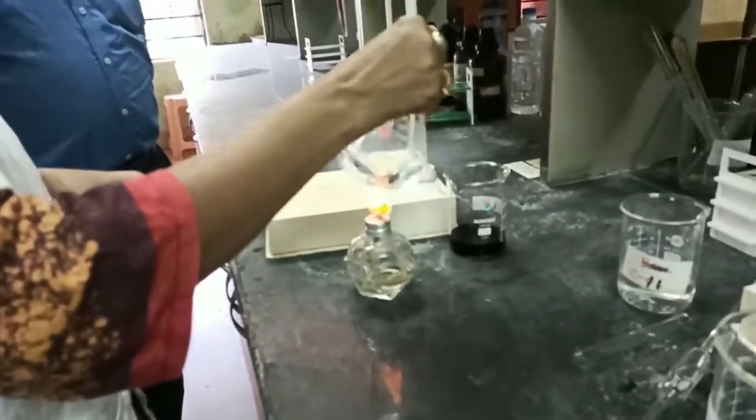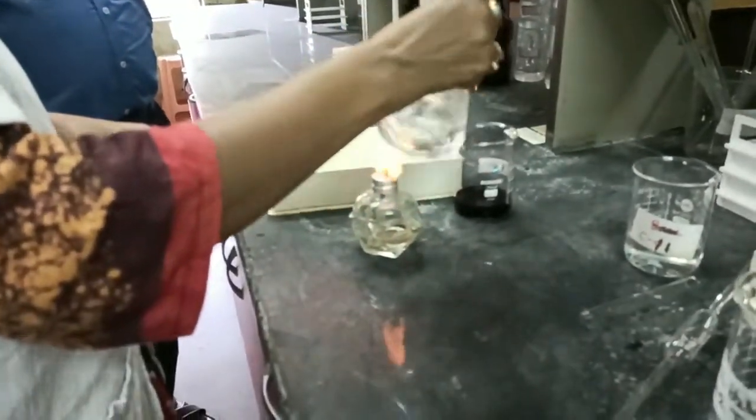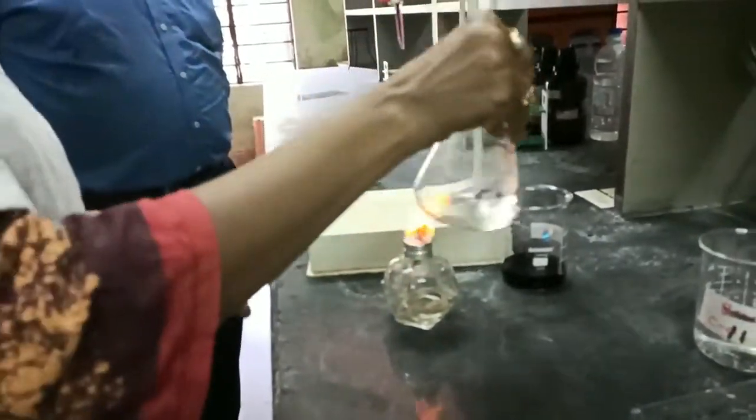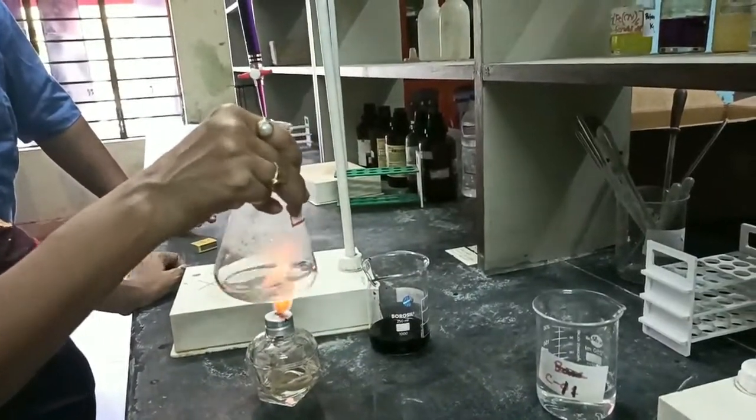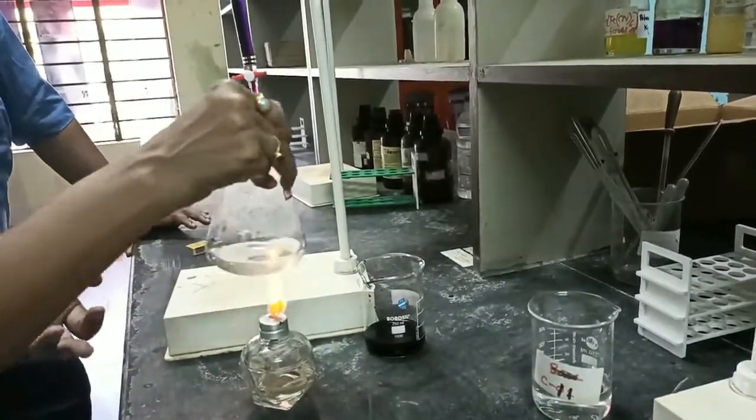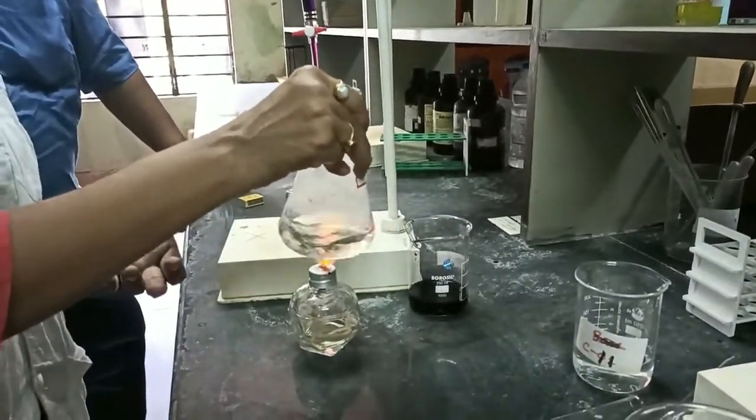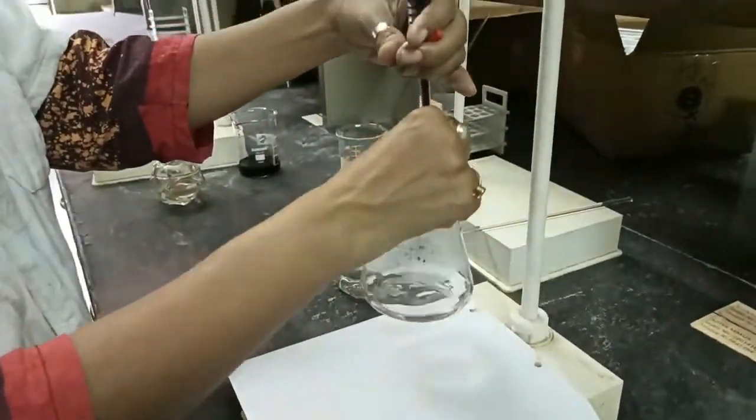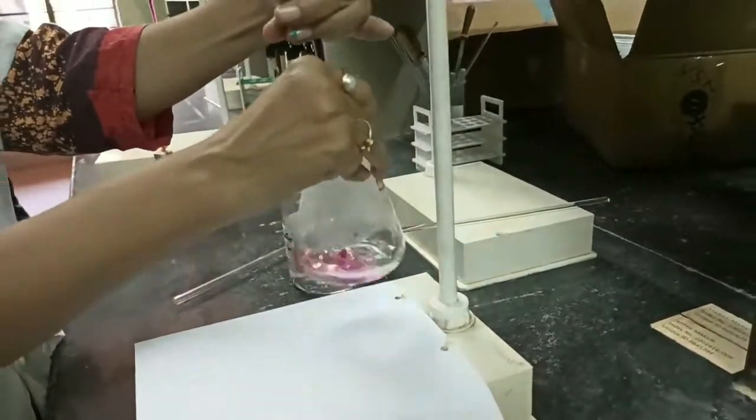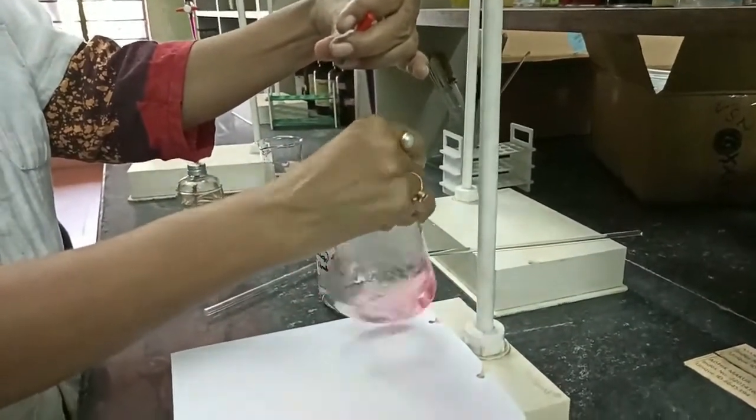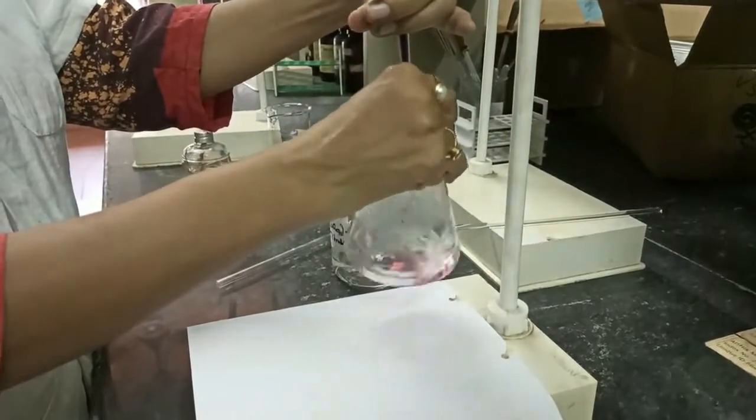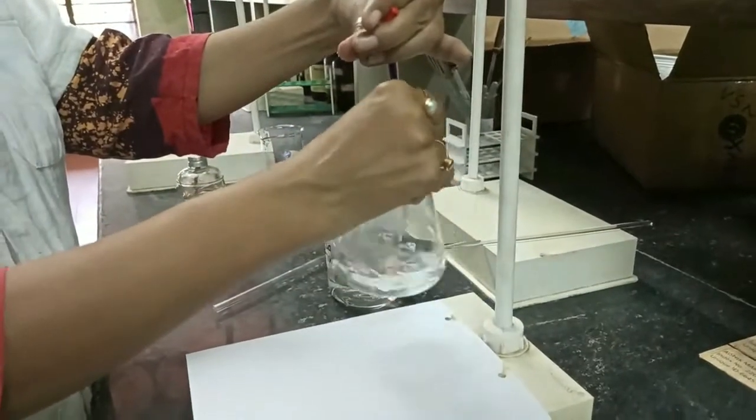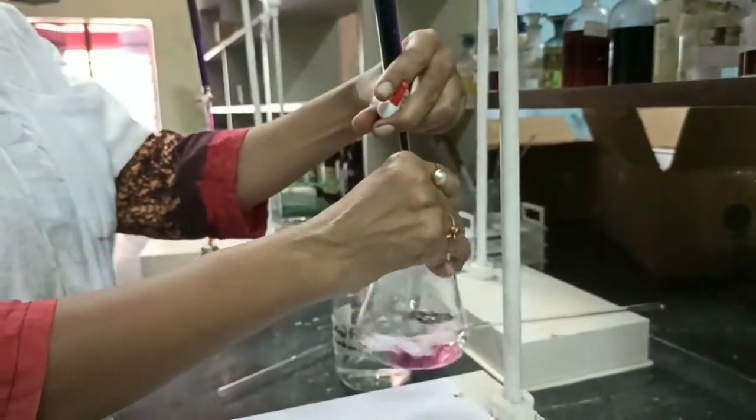Make sure the solution should not boil. When it is almost unbearable to touch, at that point of time we should start the titration rapidly with the solution. We need to do the titration process very rapidly so that the temperature remains in the range of 60 to 70 degree centigrade. If the temperature falls during the titration then there may be a possibility to have a wrong reading.